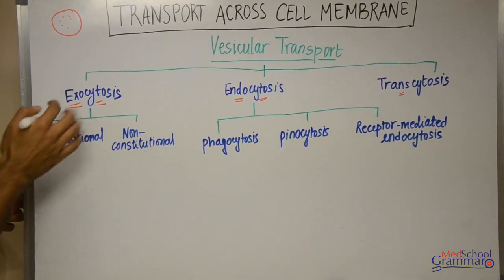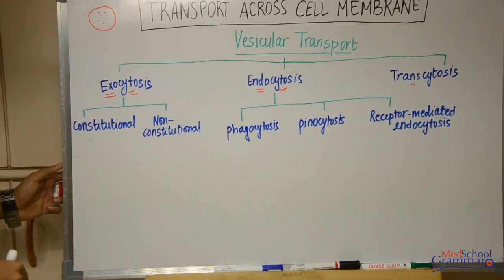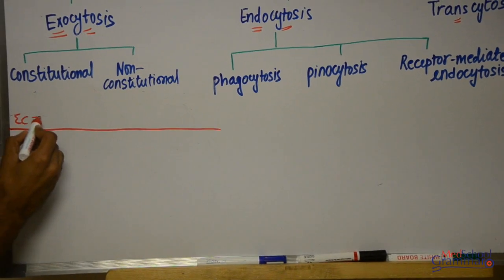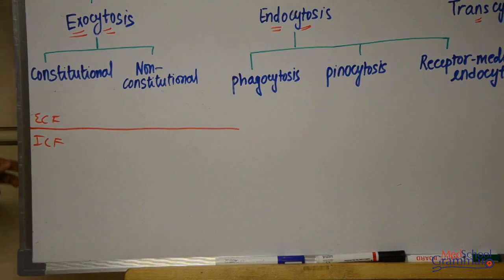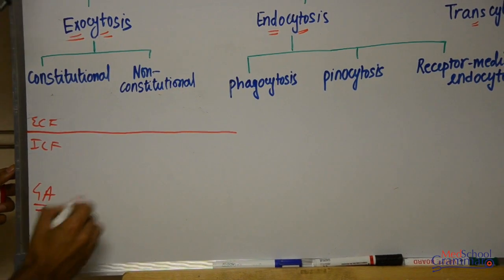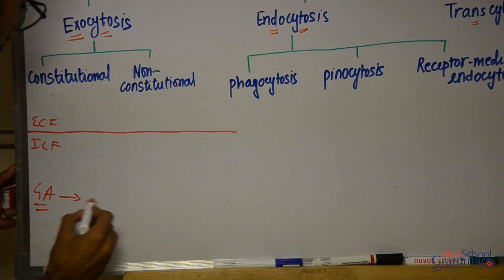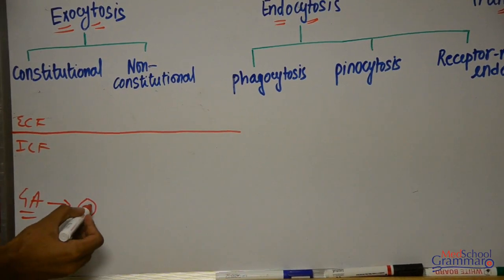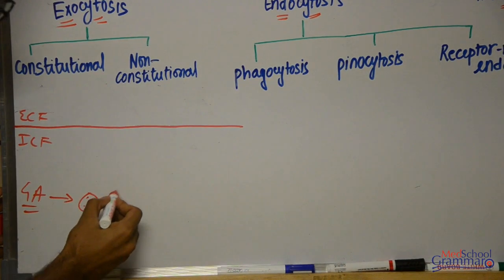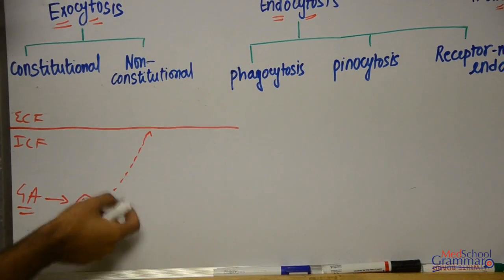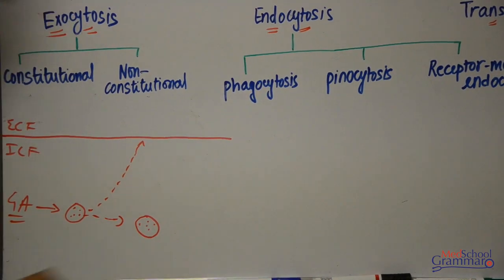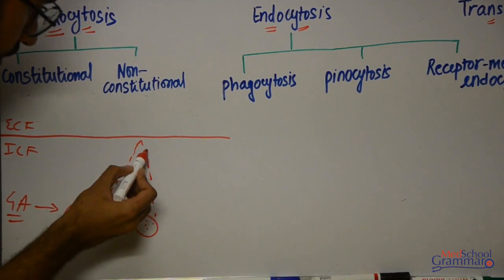Exocytosis is of two types: constitutional and non-constitutional. Imagine the plasma membrane with extracellular fluid outside and intracellular fluid inside. Within the cell we have the Golgi apparatus, which produces these vesicles — membrane-bound structures containing macromolecules. Once formed, a vesicle may follow two paths: it can directly bind with the plasma membrane and release its contents outside, or it can undergo certain processing and modifications first.